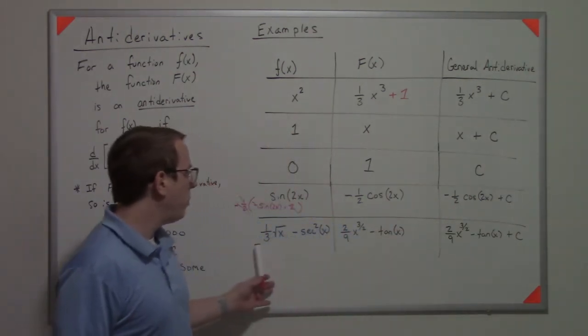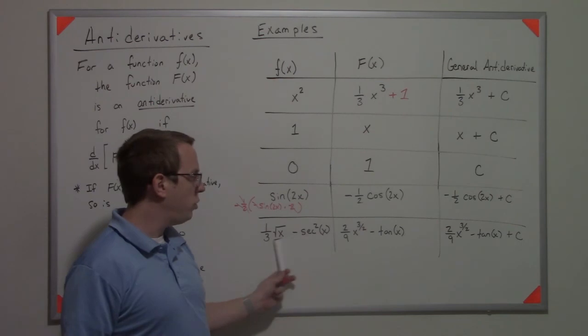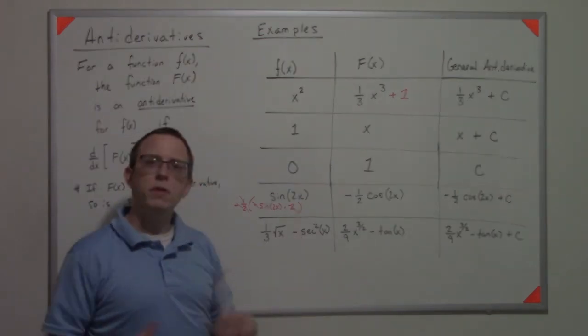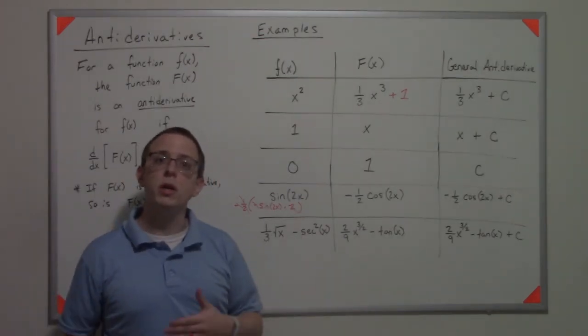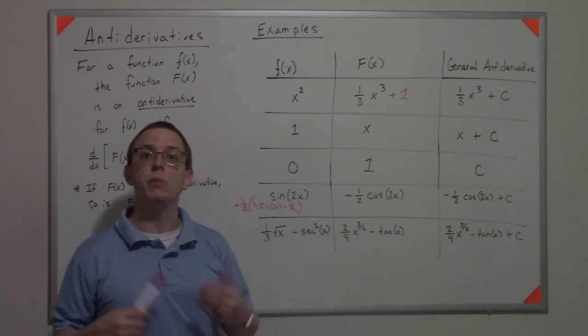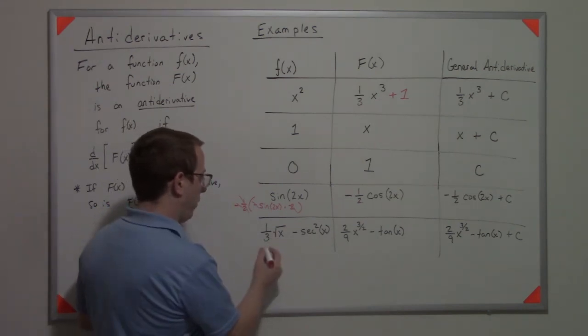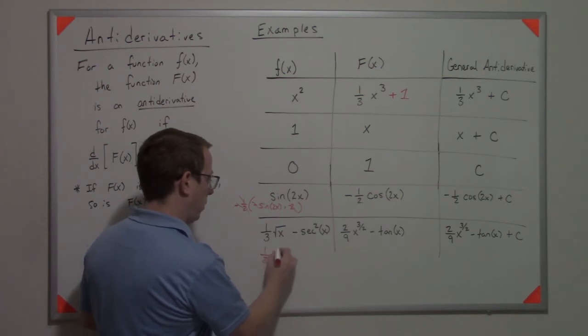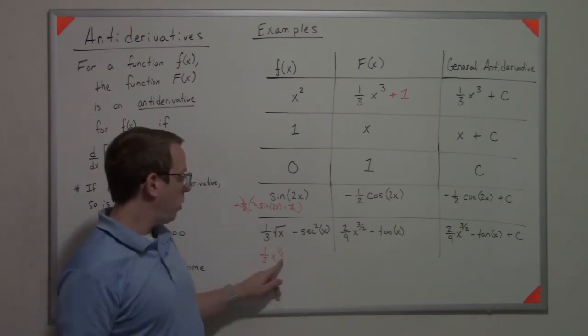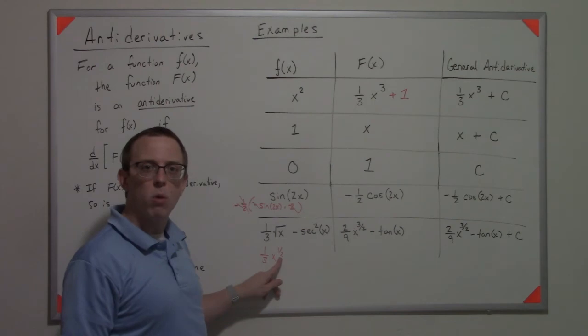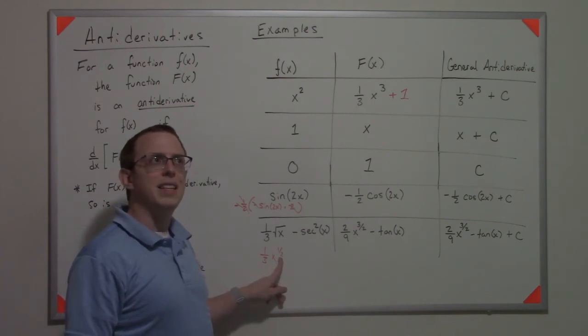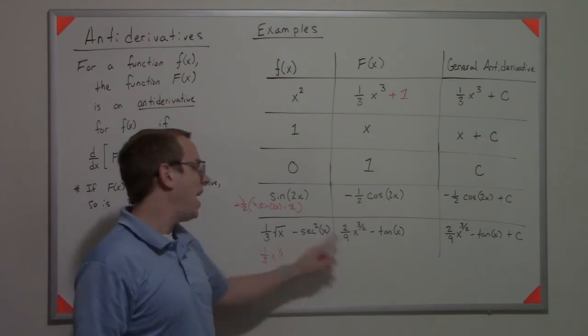Finally, we have this where we actually have two functions together. In this particular case, we're just only going to take the antiderivatives of them separately. Since this is x to the one-half, then I know that if this is a power of one-half, then its antiderivative has to add one to the power.